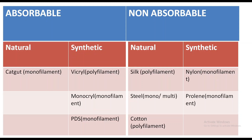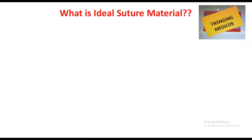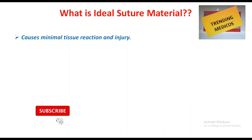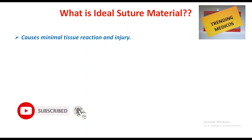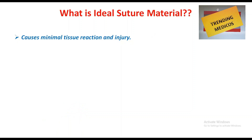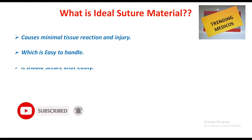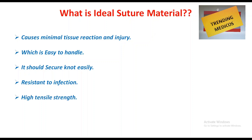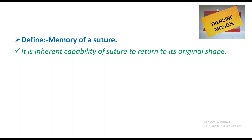The ideal suture material — a common exam question — causes minimal tissue reaction and injury, is easy to handle, and should secure the knot easily so it does not open when tied. It should also have resistance to infection, high tensile strength, and less memory.